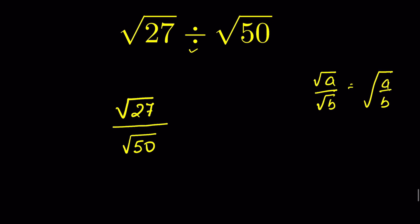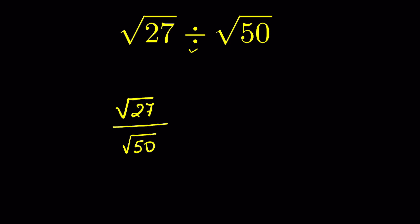Similarly, if we have square root of a times square root of b, we can write it as square root of a times b. So here we can write square root of 27 upon 50.